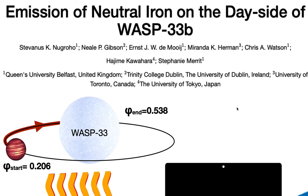The motivation of this work is that titanium oxide was suggested to be a responsible species for creating stratospheres or thermal inversions in the atmosphere of hot Jupiters. But the problem is that titanium oxide has only been detected in two hot Jupiters: WASP-19 and WASP-33b. So that got us thinking whether titanium oxide can really be the main cause for the thermal inversion in hot Jupiters.